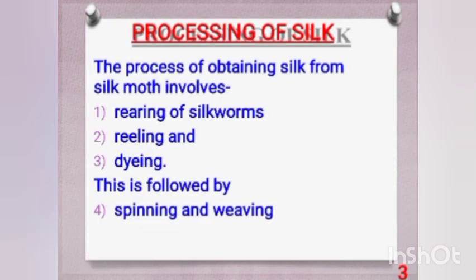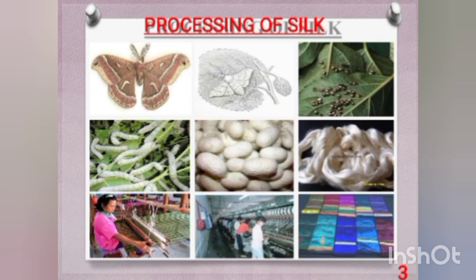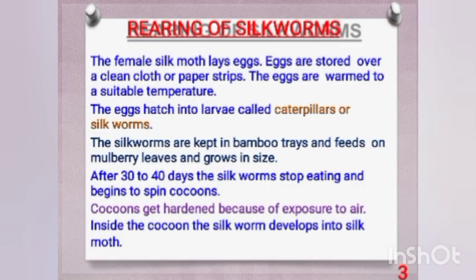The processing of silk involves: rearing of silkworms (sericulture), reeling, dyeing, spinning, and weaving. In rearing, the female silkworm lays eggs, which are stored under paper strips and kept at a suitable temperature. They hatch into larvae, and the caterpillars eat mainly mulberry leaves.